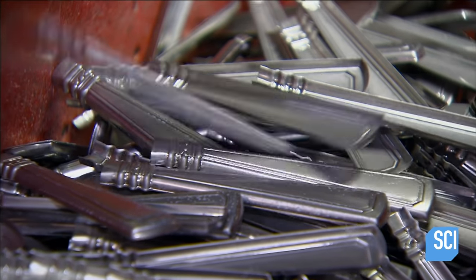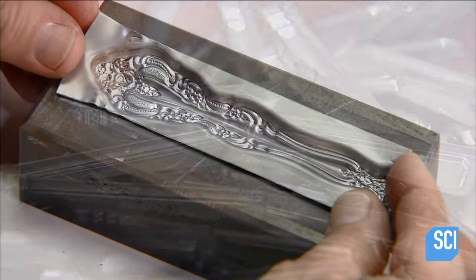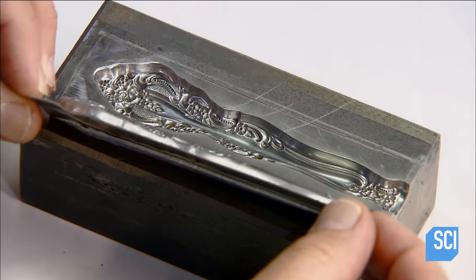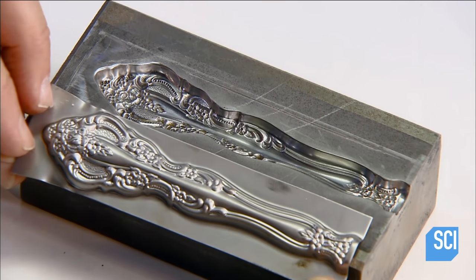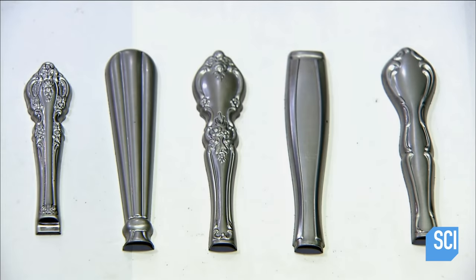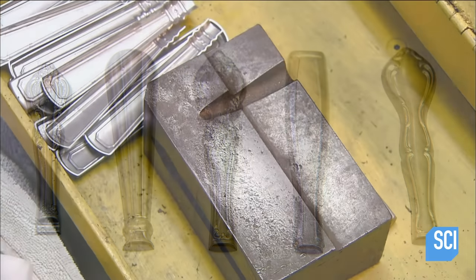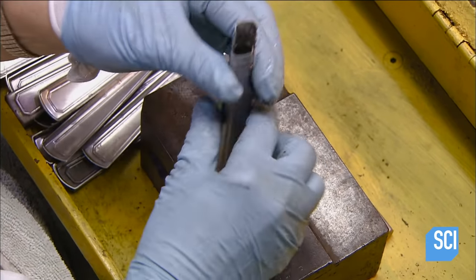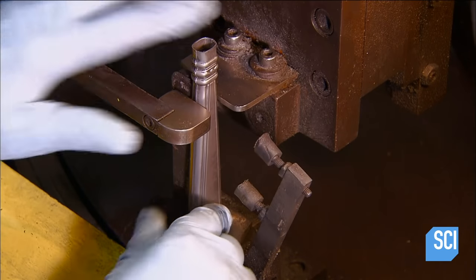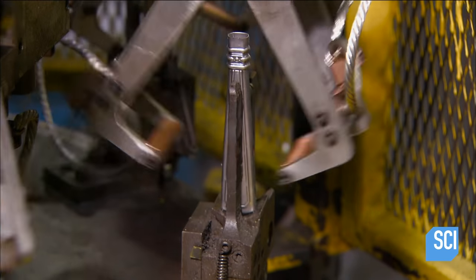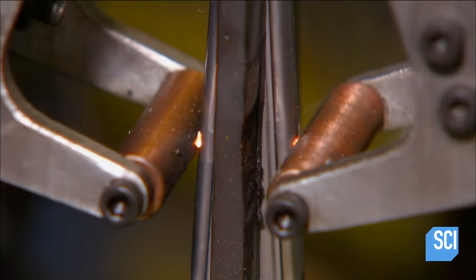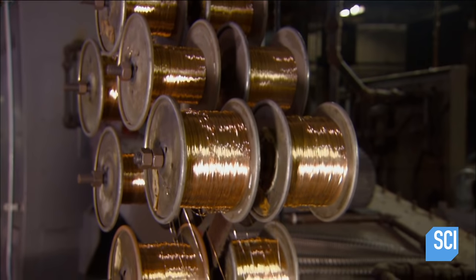This is critical because the handles often feature intricate designs. Each forged knife handle piece starts out as half a handle. A spot welding machine tacks the two halves together, forming a complete handle.